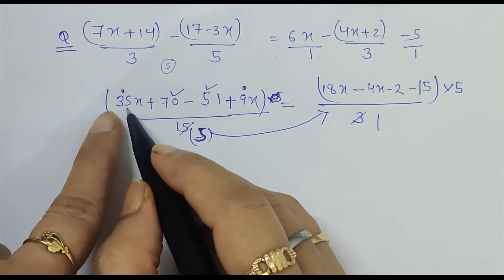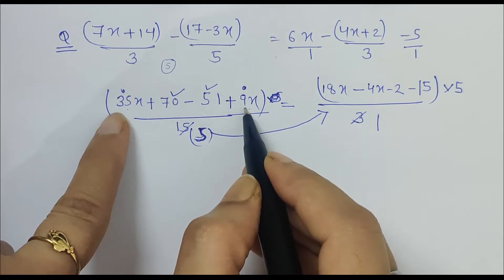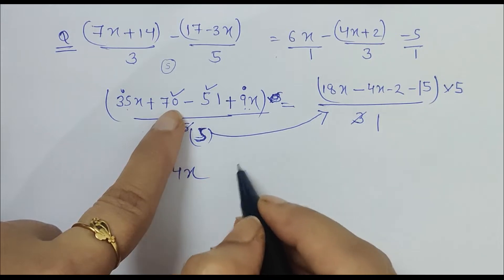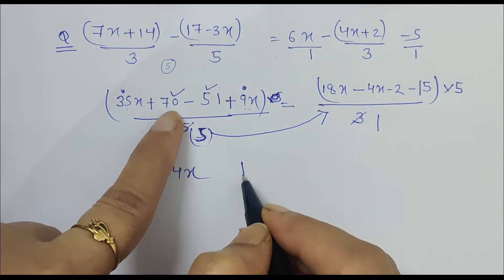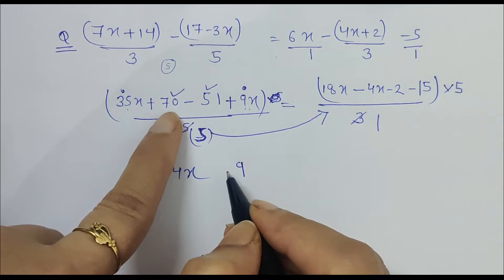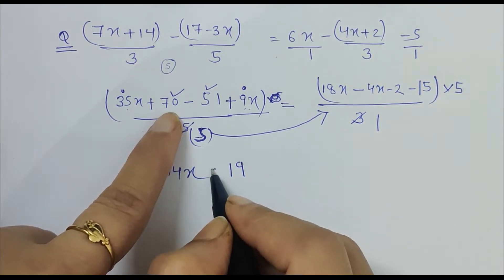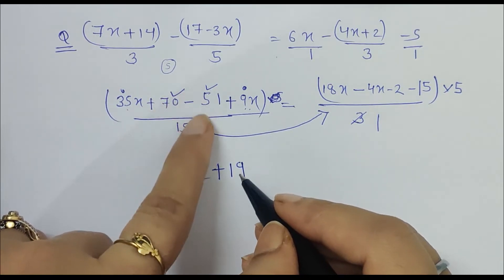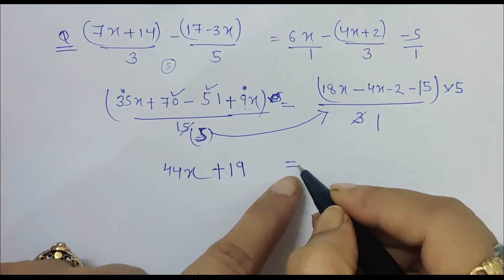Let's further calculate. These are like terms. So what is 35 plus 9? It is 44x. What is 70 minus 51? It is 19, plus 19.